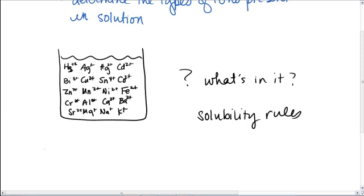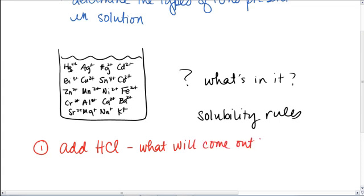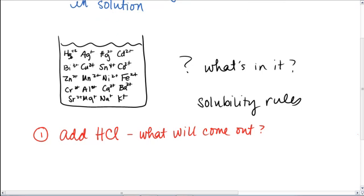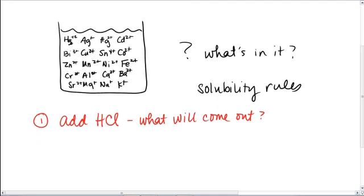And so, the first thing I might do to this solution, if I was trying to identify what's in it, is I might add hydrochloric acid. And if I do, the question is, well, if I do that, what will come out of solution? What will precipitate out of solution? And if you think about it, it's really going to be those things that are the insoluble chlorides. So, what would come out?